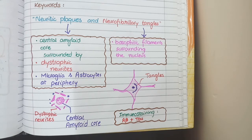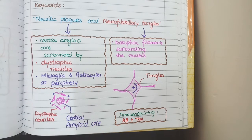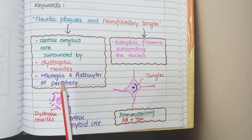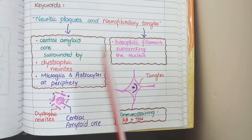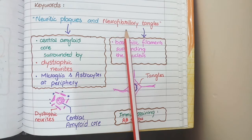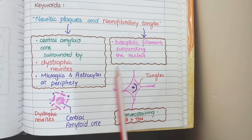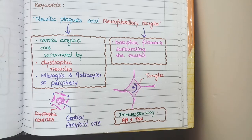Let's revise the pathological features in Alzheimer's disease. There are neuritic plaques composed of a central amyloid core surrounded by dystrophic neurites, with microglia and astrocytes at the periphery. In neurofibrillary tangles, you will see basophilic filaments surrounding the nucleus. And lastly, there will be positive immunohistochemical staining for amyloid beta protein and tau protein. This concludes the pathological features of Alzheimer's disease.